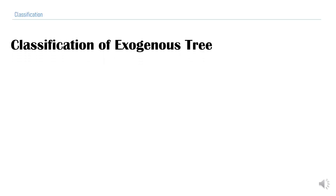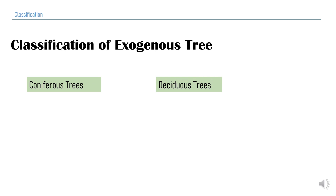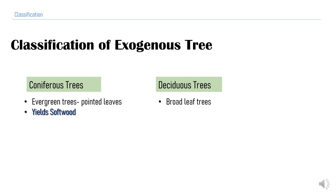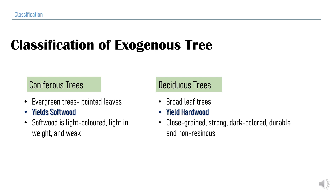Classification of exogenous trees: as endogenous trees have less application, we focus on exogenous trees. Exogenous trees can be coniferous or deciduous. Coniferous trees are called evergreen trees with pointed leaves, while deciduous trees have broad leaves and are called broad-leaf trees. Coniferous trees yield softwood, while deciduous trees yield hardwood. The softwood from coniferous trees is light in color, light in weight, and weak. Deciduous trees yield hardwood, which is closely grained, strong, dark colored, durable, and non-resinous.